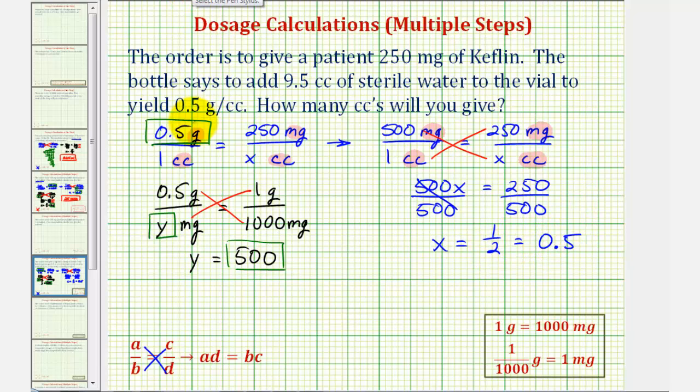So to answer the question, if you need to give a patient 250 milligrams of Keflin, you need to give them 0.5 cc's. I hope you found this explanation helpful.